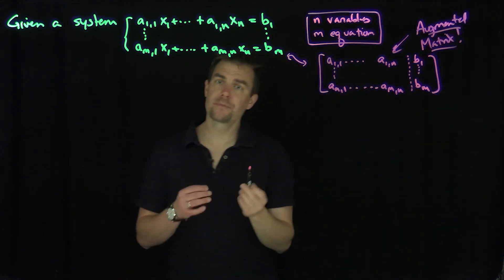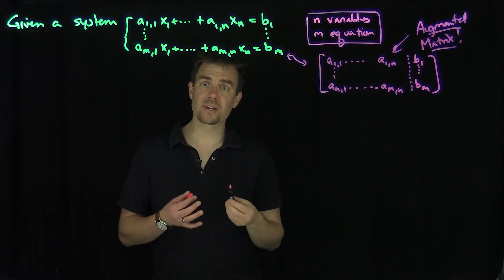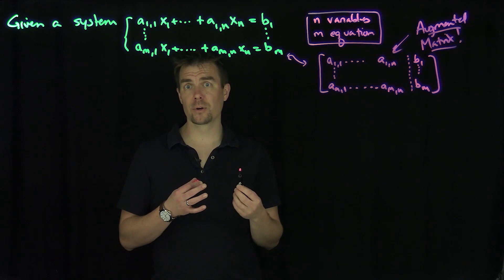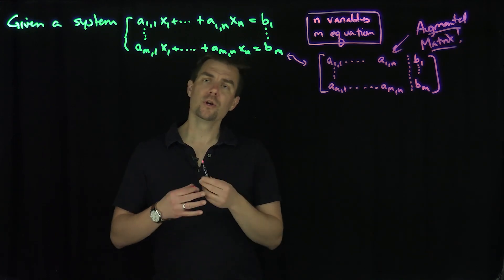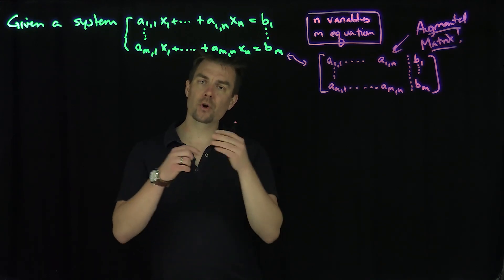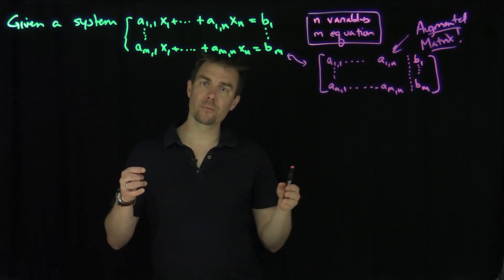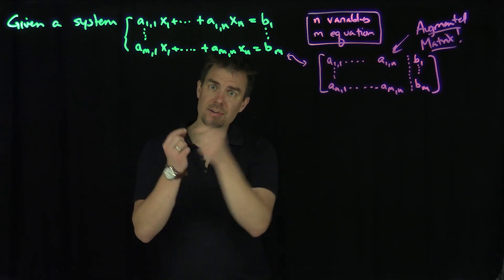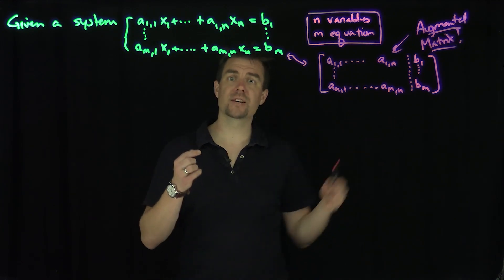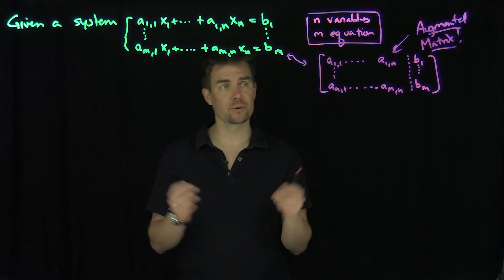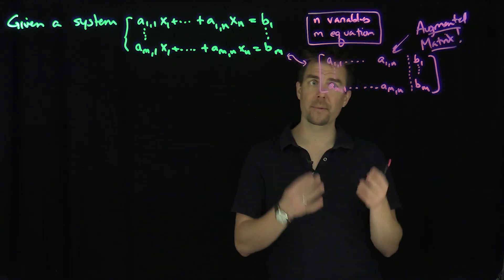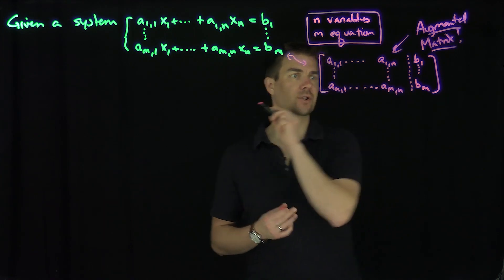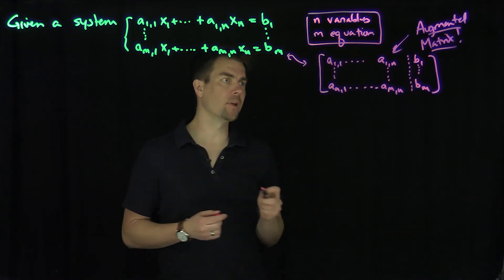This is very similar to what you do in synthetic division. In synthetic division, when dividing polynomials, you simply store the coefficients of the polynomial and put the root you're testing in a box — you don't carry around all the variables any longer. The augmented matrix is a very similar construction.